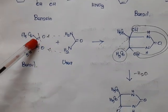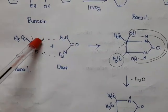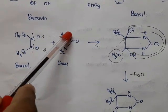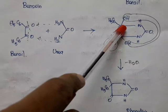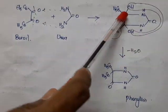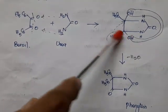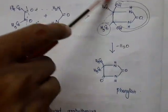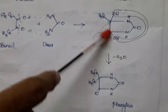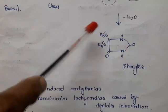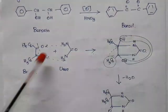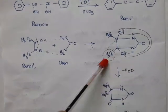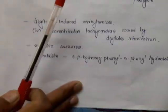When benzil reacts with urea, the double bond between carbon and oxygen is broken. The NH2 groups of urea combine with the carbonyl oxygens, forming a cyclic intermediate with OH groups. In the next step, water is eliminated (OH and H removed), and a phenyl group migrates from one carbon to the adjacent carbon to satisfy valency, with a double bond forming. This gives phenytoin.